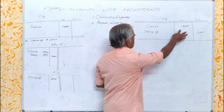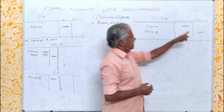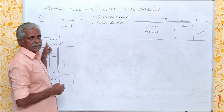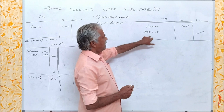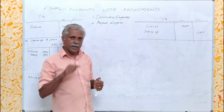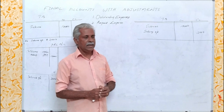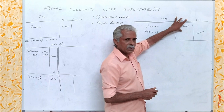Now take the second instance. The same information is given: salaries rupees 10,000 and salary outstanding rupees 3,000. The difference here is that salary outstanding is given in the trial balance, whereas in the first instance it was given as an adjustment. If salary outstanding appears in the trial balance, what is its meaning? This outstanding amount...